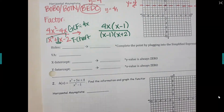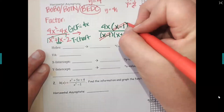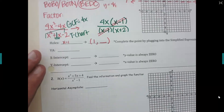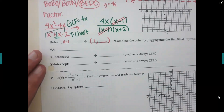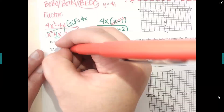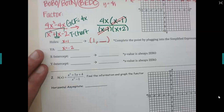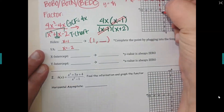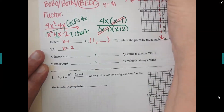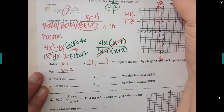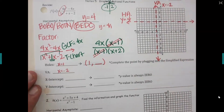Now let's review the rest. If it crosses out, it's a hole. What's going to cross out here? The minus ones — which means the hole is going to be at positive one, or one comma something; we'll find the y value later. The vertical asymptote is any x's left on the bottom. I have an x plus two, so the vertical asymptote is x equals negative two. Draw that in now — x equals negative two is a dotted line running up and down. Label it VA: x equals negative two.